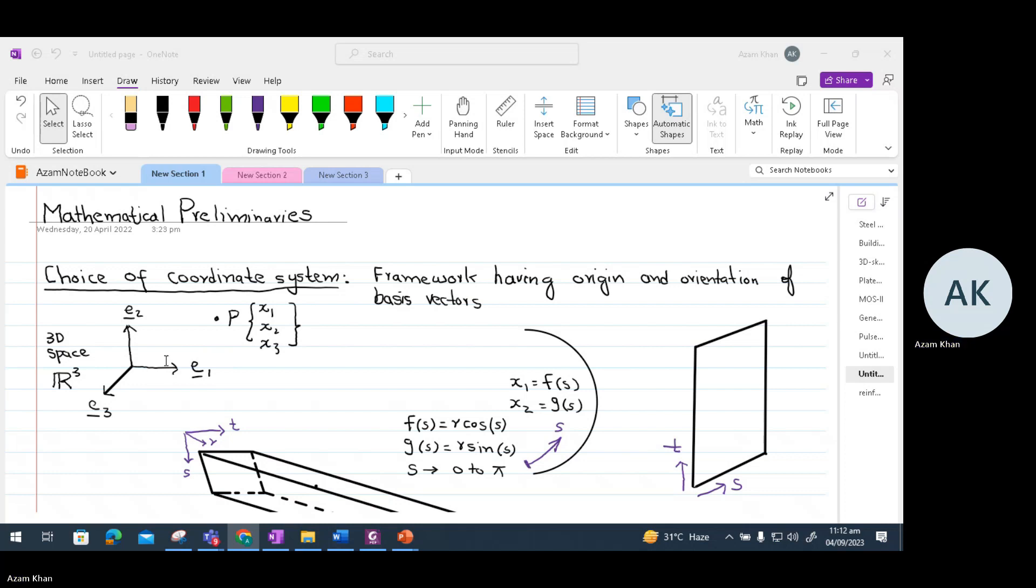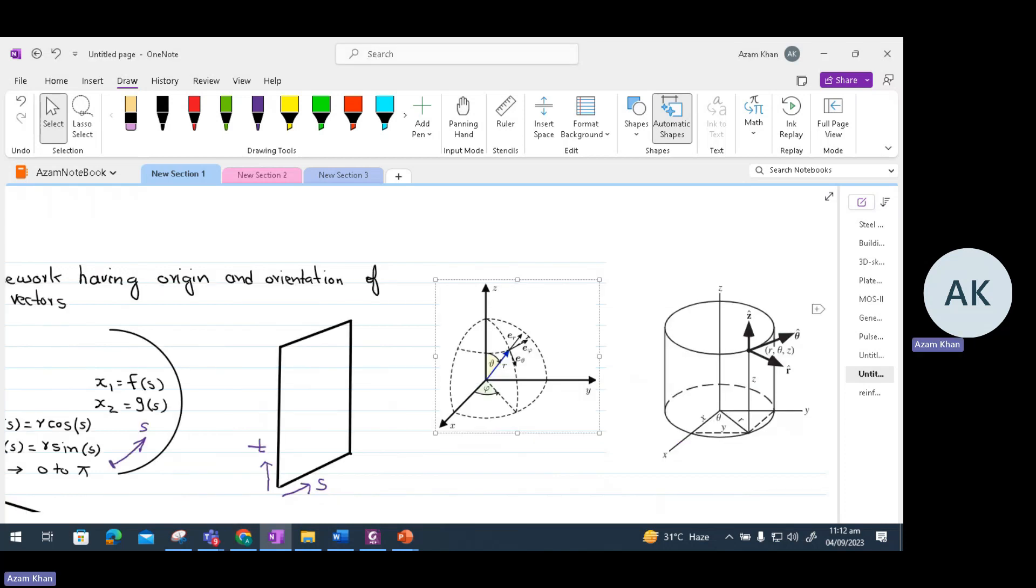The other important coordinate system used in structure mechanics is a polar coordinate system. Polar coordinate system represents a point using a distance, which is normally a radius from an origin or a central point, and an angle. This angle is measured in degrees or radians from a reference direction, as can be seen in this figure.